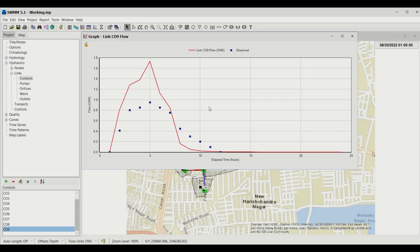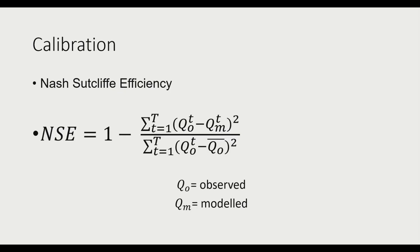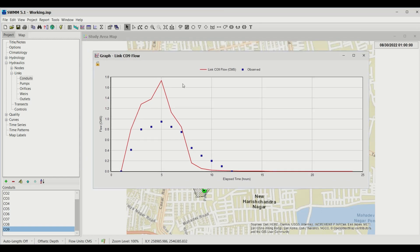To measure calibration efficiency, use the Nash-Sutcliffe Efficiency (NSE). The formula is: NSE = 1 minus the summation of (observed minus modeled)² across all time steps, divided by the summation of (observed minus average observed)². This is one of the most prevalent measures of calibration performance.